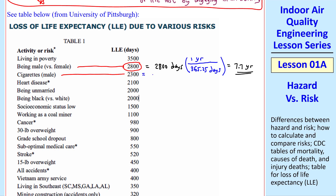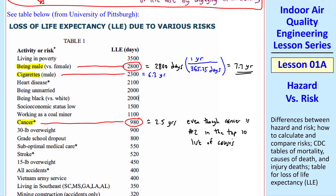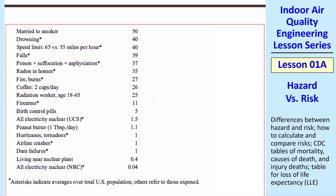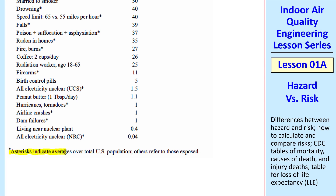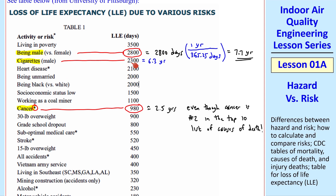A male smoking reduces life expectancy by about 6.3 years. What about cancer? It's much smaller — only 980 days, or about 2.5 years of loss of life — even though cancer is number 2 in the top 10 causes of death. The key lies with an asterisk in the table. The asterisk indicates averages over the total U.S. population, while entries without an asterisk mean only those exposed. So the smoking figure includes only males who smoke, whereas cancer includes everybody in the country — the cancer LLE would be much larger if we included only those who actually get cancer.